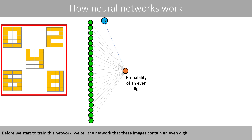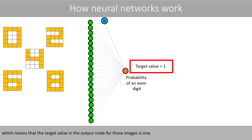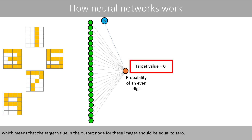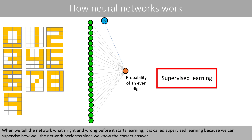Before we start to train this network, we will tell the network that these images contain an even digit, which means that the target value in the output node for these images is 1. We also tell the network that these images contain an odd digit, which means the target value should be 0. When we tell the network what's right and wrong before it starts learning, it is called supervised learning, because we can supervise how well the network performs since we know the correct answer.